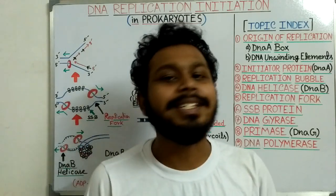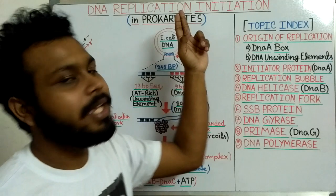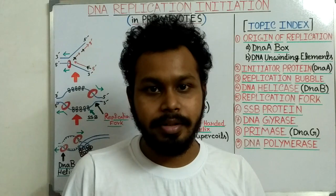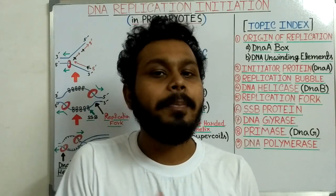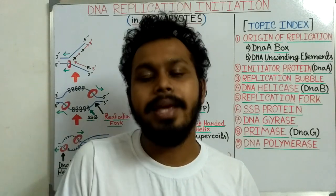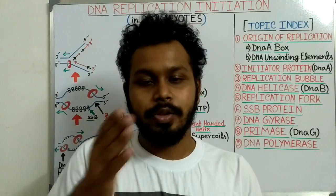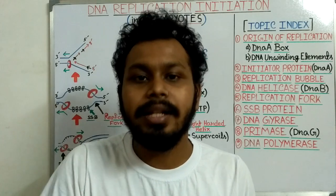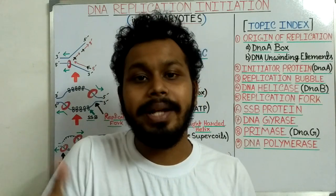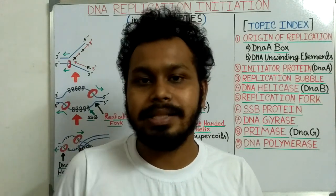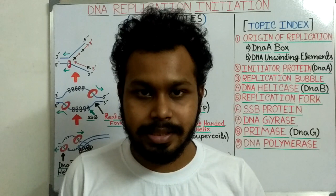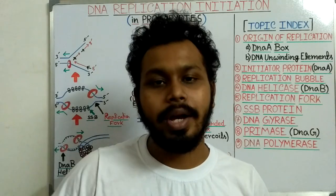Hello friends. Today in this video I am going to discuss DNA replication initiation in prokaryotes. DNA replication is a process to make identical copies of the parental DNA by a semi-conservative method. For our basic understanding, we can separate this whole DNA replication process into three stages: the initiation stage, elongation stage, and the termination stage.